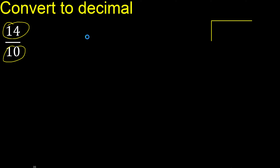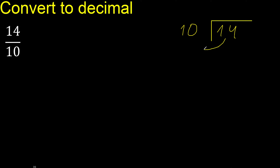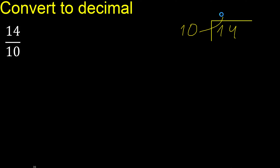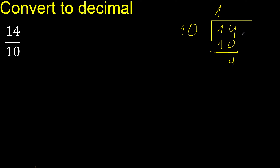14 divided by 10. 14 is not less than 10, therefore 10 multiply by which number is nearest to 14 but not greater? Multiply by 2 is 20, which is greater. Therefore multiply by 1 is 10. Subtract: the remainder is 4. There is no number that goes down.